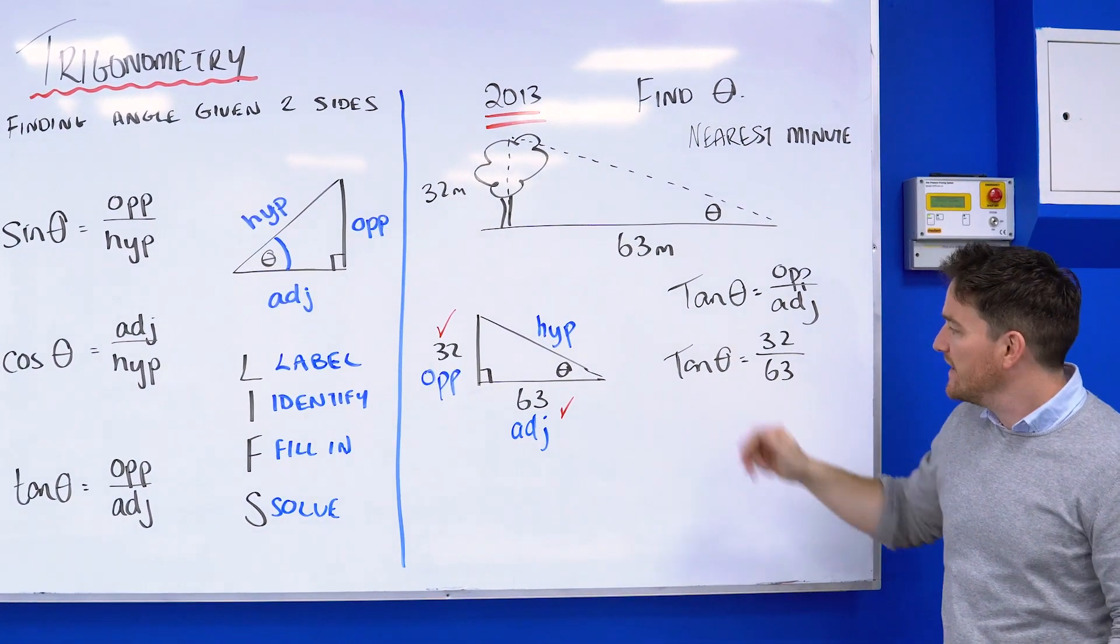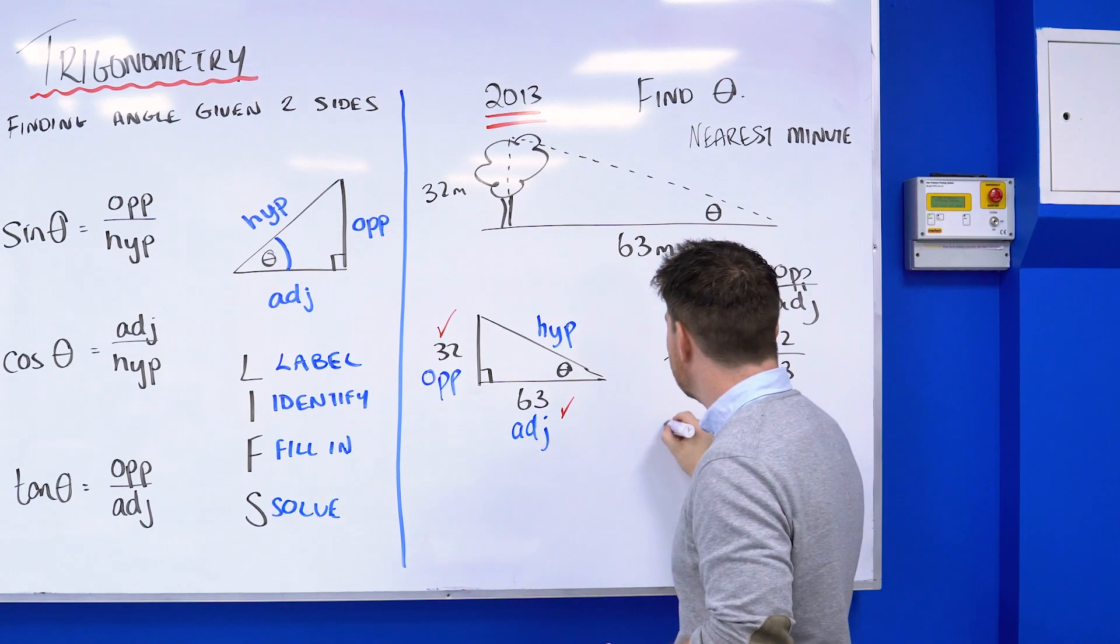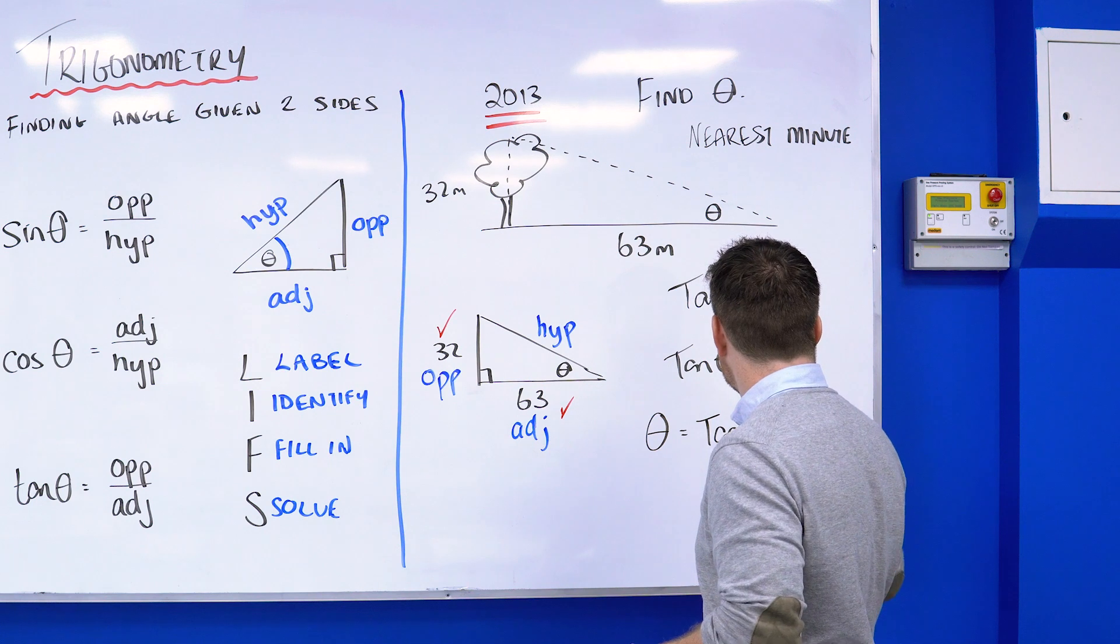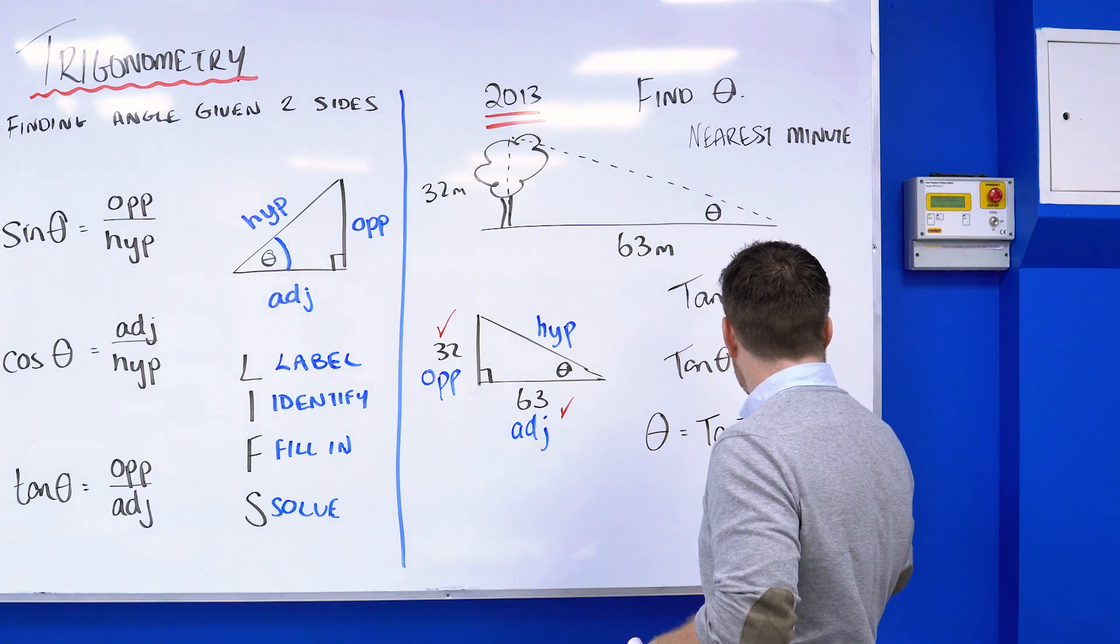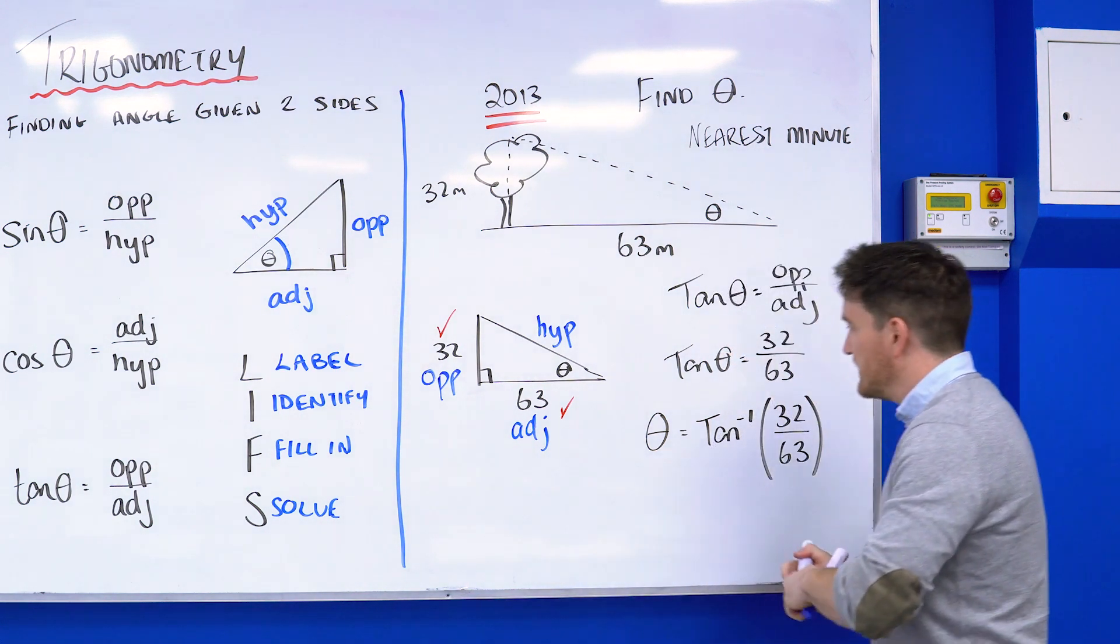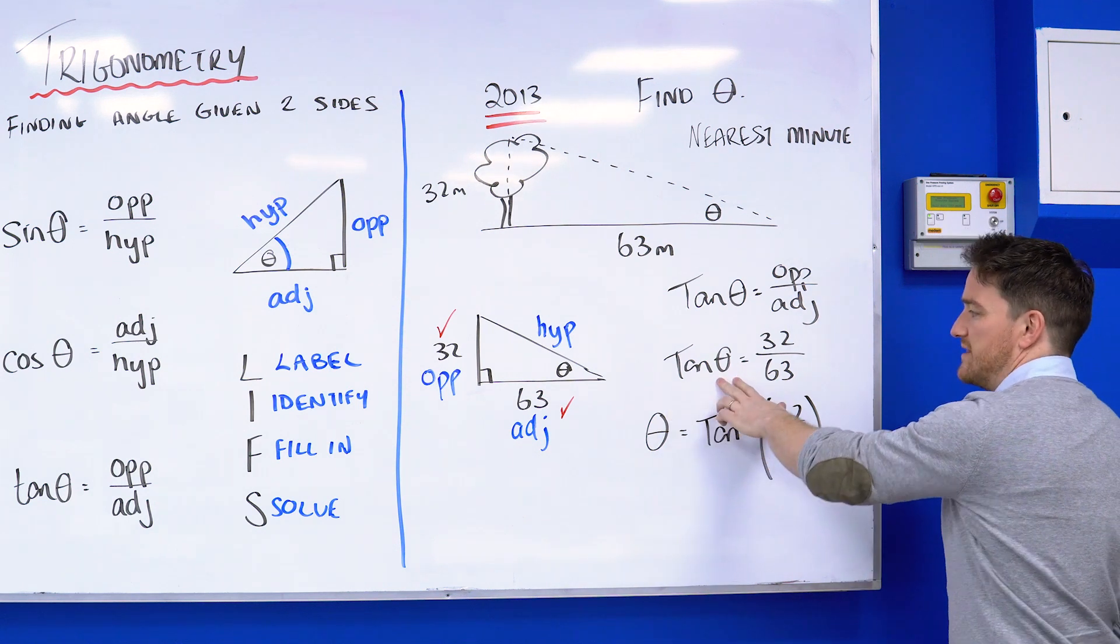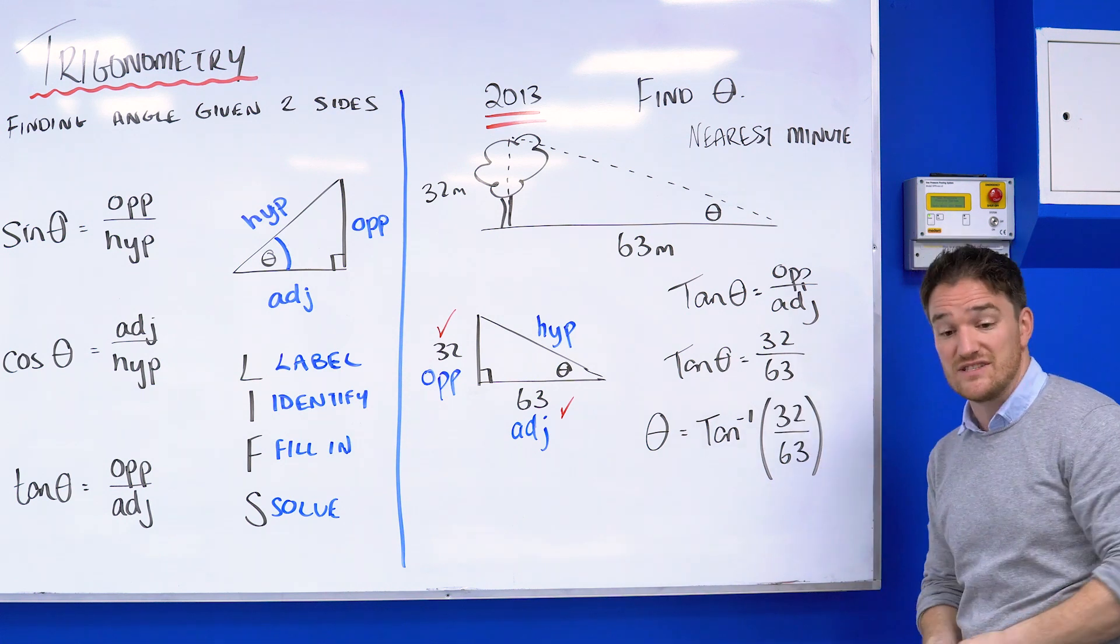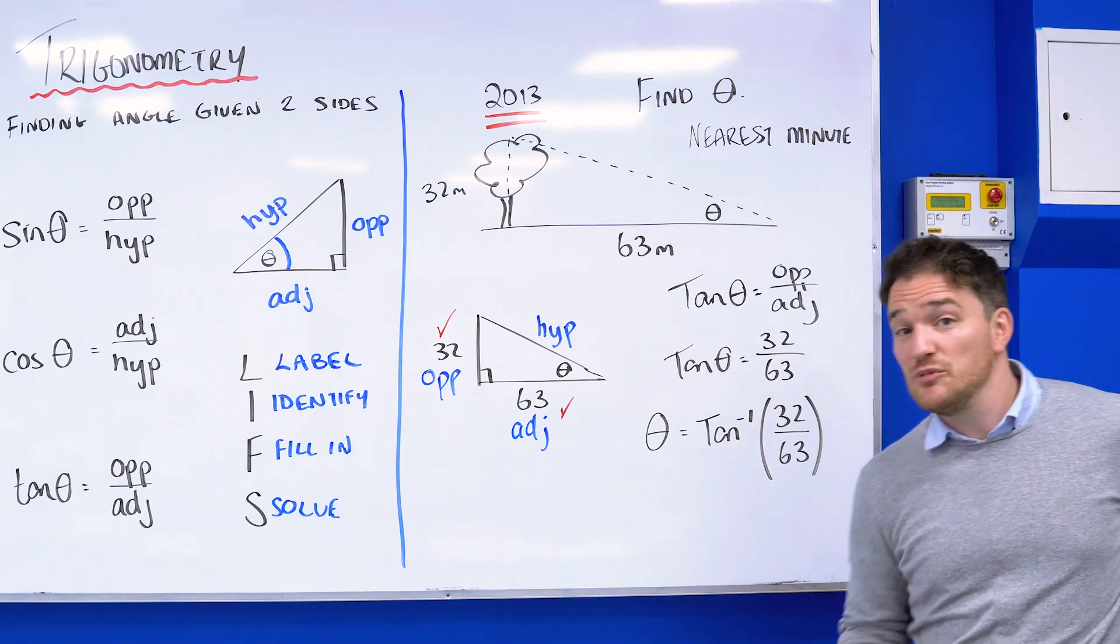At this point we're trying to find the angle, so we need to get rid of this bit with the tan. What I'm going to do is tan inverse of the other side. To get rid of tan with a theta, I do the tan inverse. If you had sine, you'd do sine inverse; if you had cos, you'd do cos inverse.